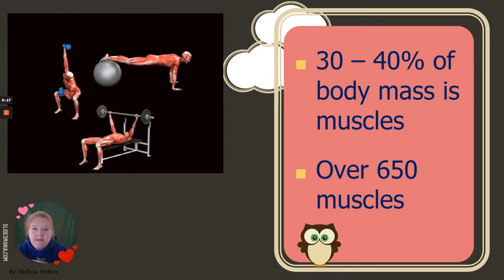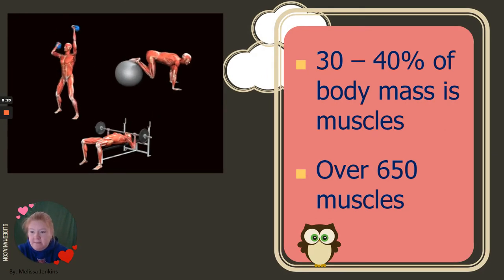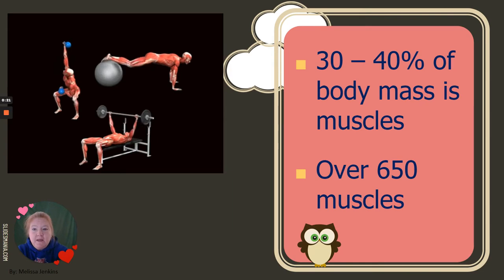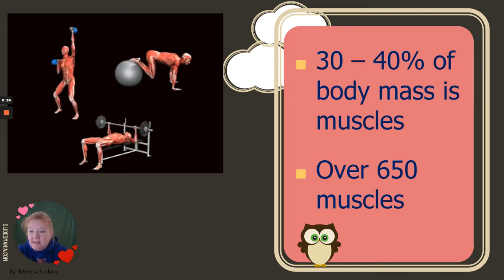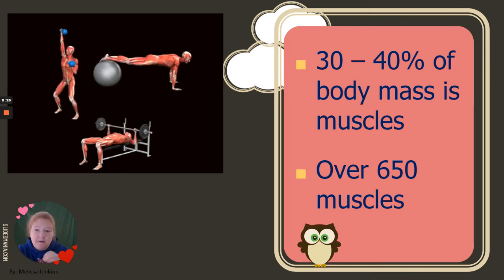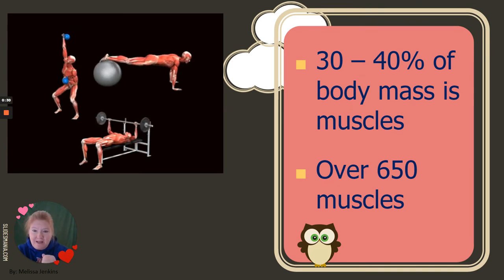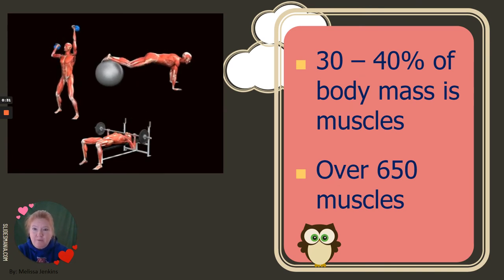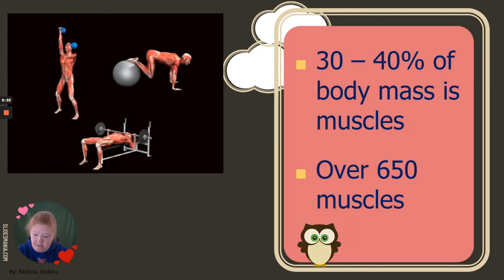The muscular system is about 30 to 40% of your body mass. There are over 650 muscles, and that's just counting skeletal muscles. There are other types of muscles as well. Skeletal muscles allow for a wide range of movements and activities.